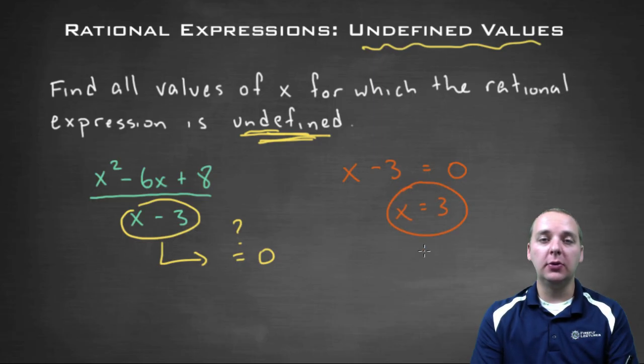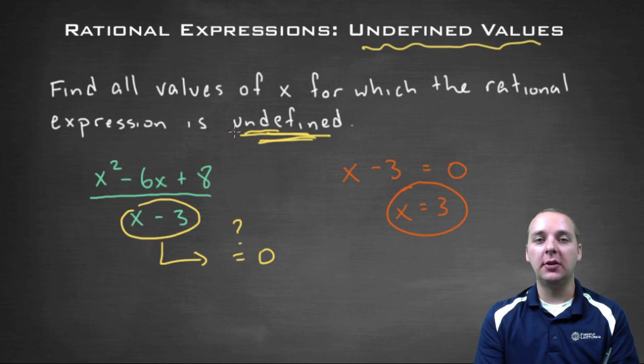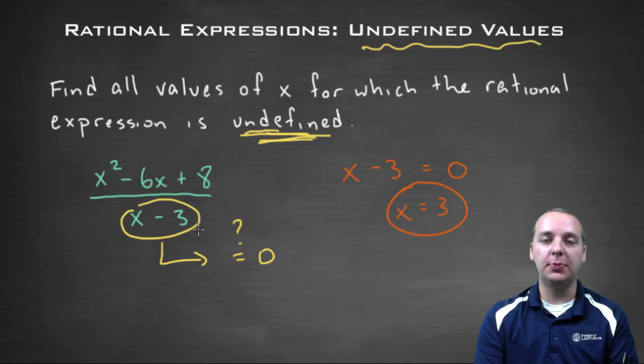So that would be your solution to this given exercise here. This is the value of x for which the rational expression is undefined because if you plugged in three for x, you would get division by zero and the expression would be, well, undefined of course.